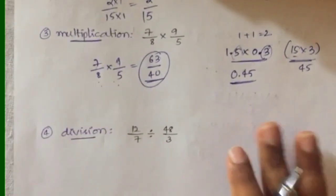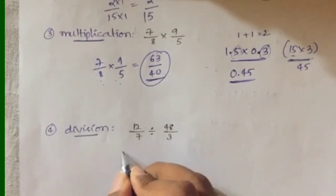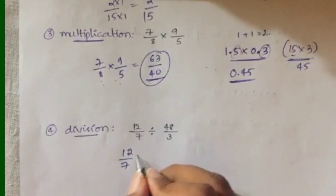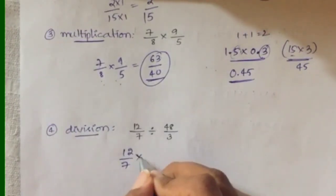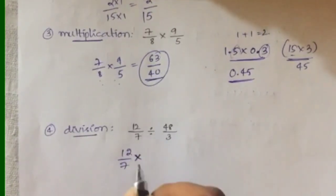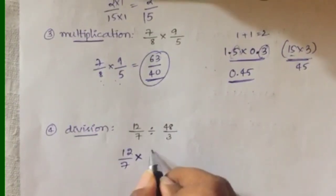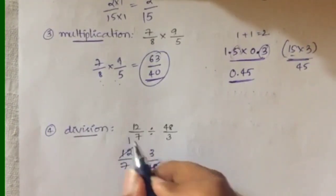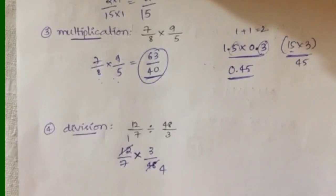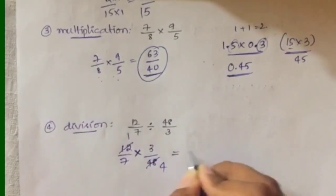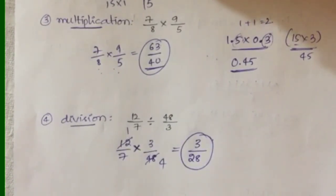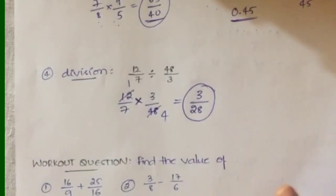That's multiplication. Now for division: take 12/7 ÷ 48/3. When dividing, you change the division sign to a multiplication sign and write the reciprocal of the second fraction — so 48/3 becomes 3/48. Now multiply: 12/7 × 3/48. You can cancel: 12 and 48 share a factor of 12, so they simplify. This gives 3/28. For division, simply change to multiplication and use the reciprocal.